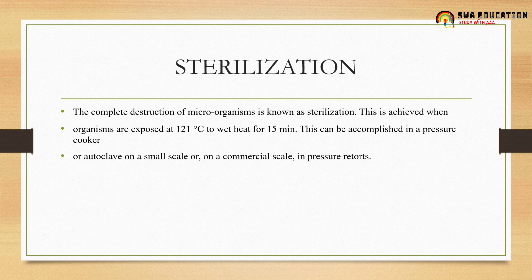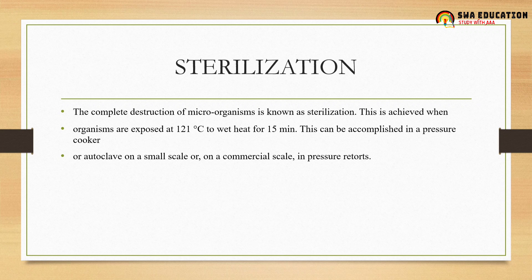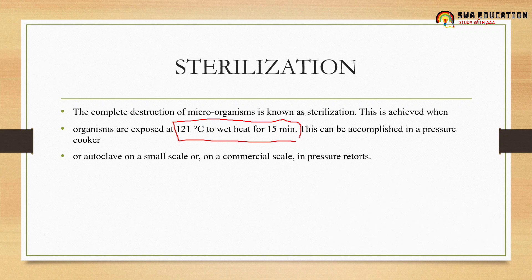Complete destruction of microorganisms is known as sterilization. This is achieved when organisms are exposed to wet heat at 121 degrees Celsius for 15 minutes, accomplished in a pressure cooker — that is, an autoclave or retort on a commercial scale. So the key sterilization parameter is 121 degrees Celsius subjected to wet heat for 15 minutes.